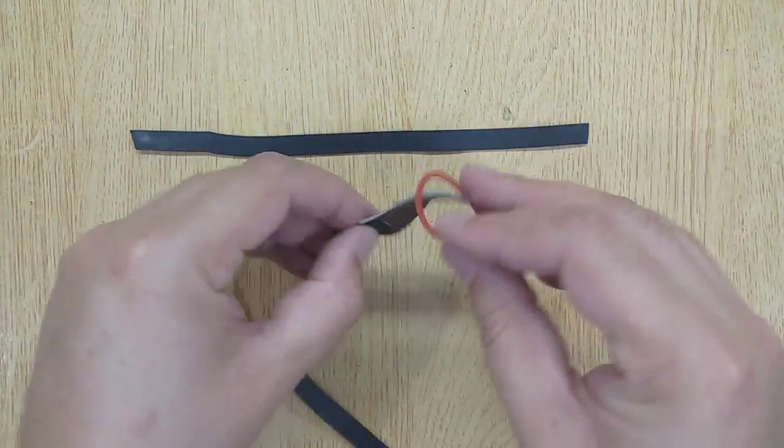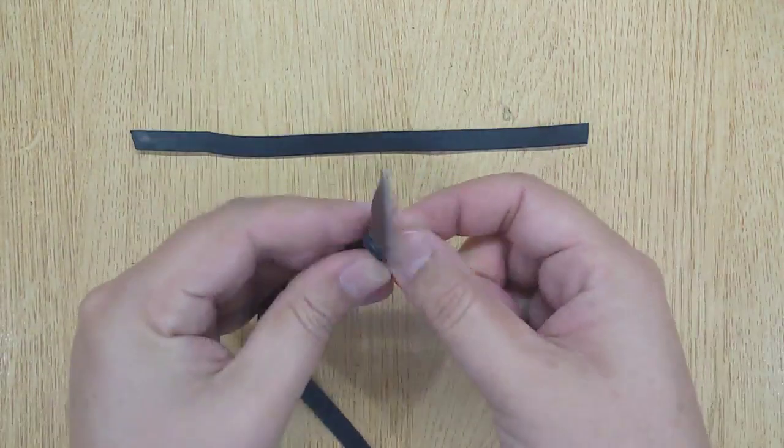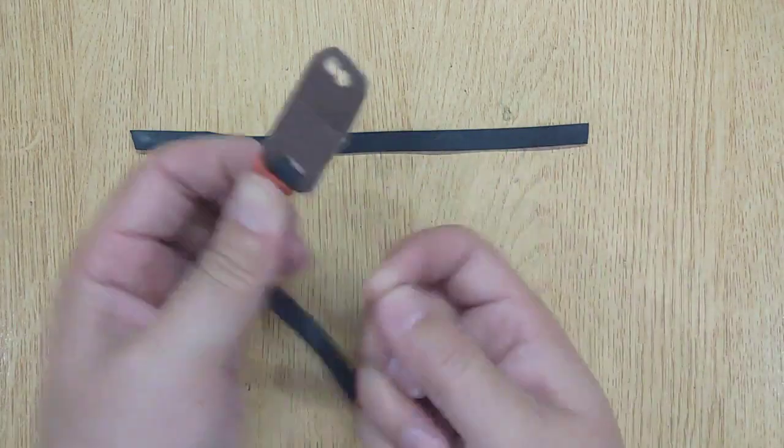Insert ends of each rubber band into both holes of the leather pouch. Tie them using small rubber bands.